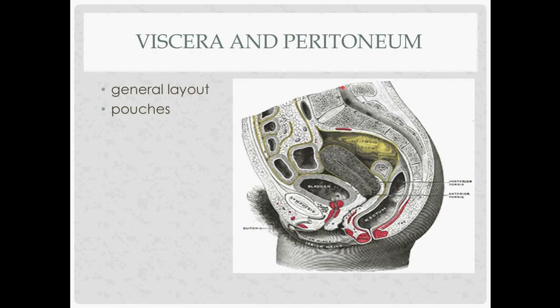In the sagittal view, the peritoneum outlines the pelvis and reflects onto the uterus, covering it until anteriorly it reflects up onto the bladder, creating the anterior vesicouterine pouch. The area where the peritoneum reflects is the vesicouterine fold. Posteriorly, we have the pouch of Douglas, separating the uterus and the rectum. The bladder is anterior and covers part of the uterus, which is why it's important to create a bladder flap or use bladder blades during procedures to push it out of the way.